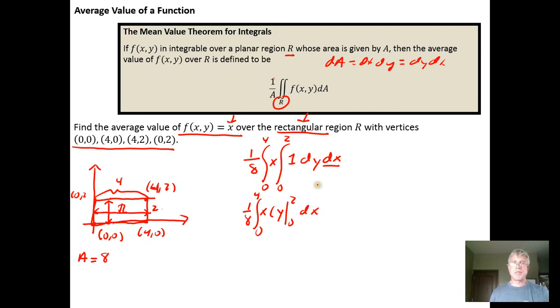We haven't integrated with respect to x yet so we still have the dx. The dy is done, we integrated with respect to y. And then when we plug in the upper and the lower limits of integration we can see the lower limit will zero out, so we're just going to get 1/8 times the integral from 0 to 4 and it's going to be 2 minus 0 is 2, so we'll have 2x dx sitting here. But the 2 is constant we can factor it out, if we do that we'll get 1/4 in front of the integral.